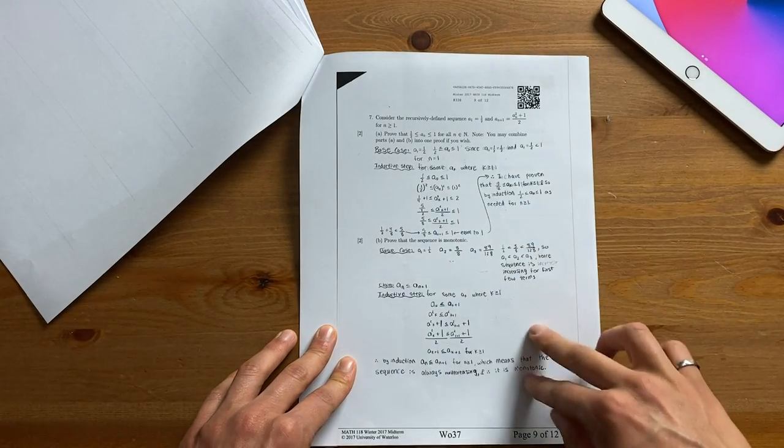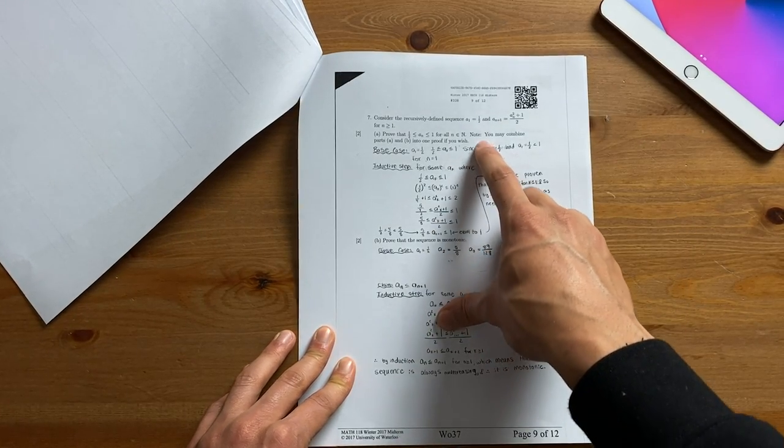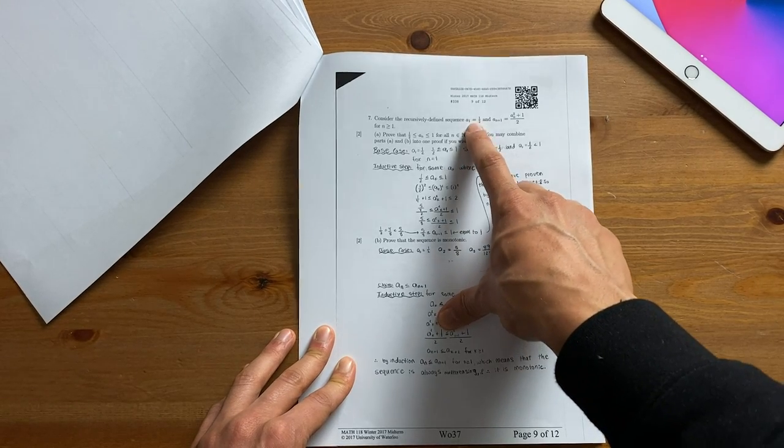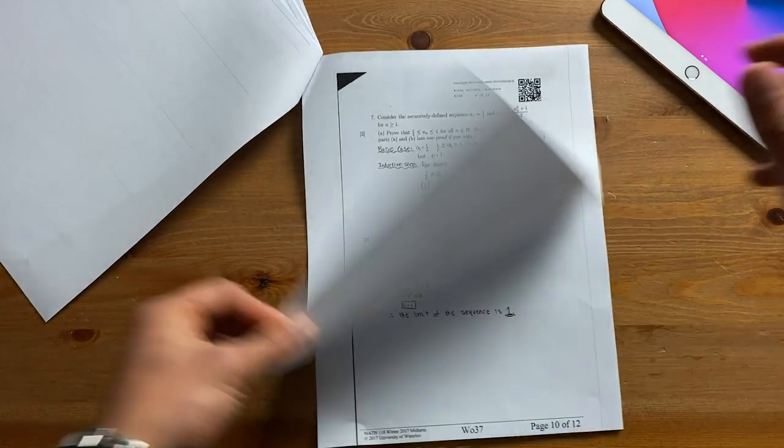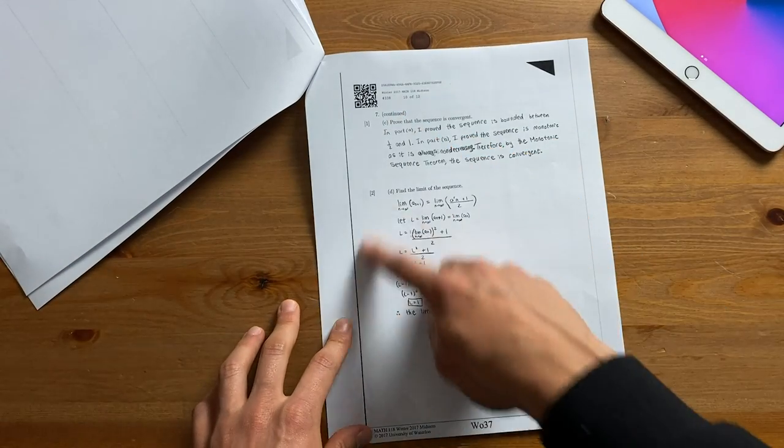This particular question gives us a sequence of numbers and in simple terms a sequence of numbers in this question is defined using these two equations and we have to do a bunch of proofs in parts A, B, and C then in part D I'm asked to find the limit.